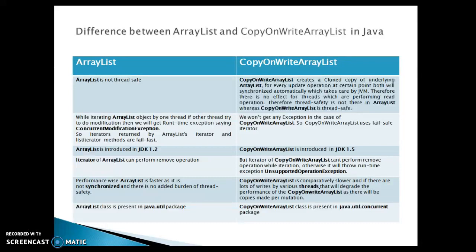Performance-wise, ArrayList is faster as it is not synchronized and there is no added burden of thread safety. CopyOnWriteArrayList is comparatively slower, and if there are lots of writes by various threads, that will degrade the performance of CopyOnWriteArrayList because a copy is made per mutation operation. As mentioned, when you perform any mutation like add, remove, or delete, CopyOnWriteArrayList takes a copy of the underlying array. So if you have a lot of mutation operations, CopyOnWriteArrayList would not be an appropriate choice. Finally, ArrayList is present in the java.util package, but CopyOnWriteArrayList belongs to the java.util.concurrent package.